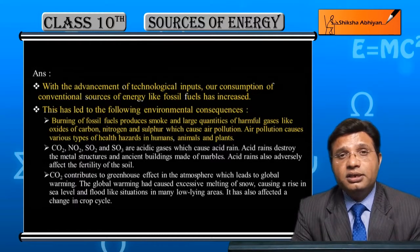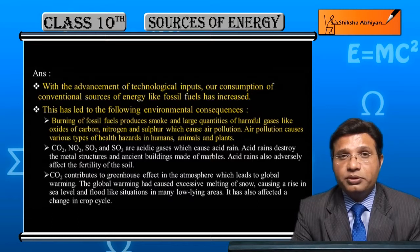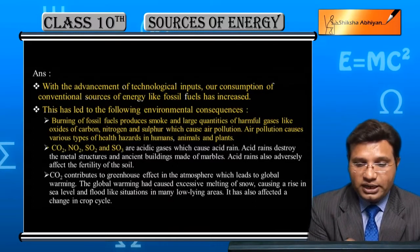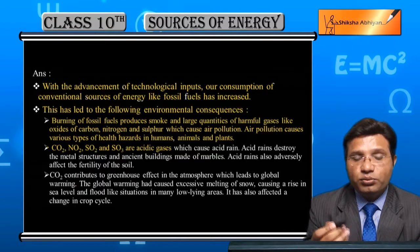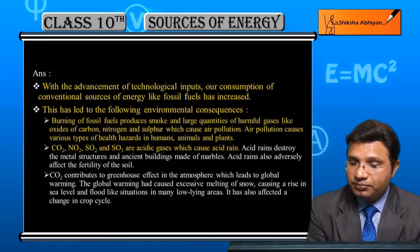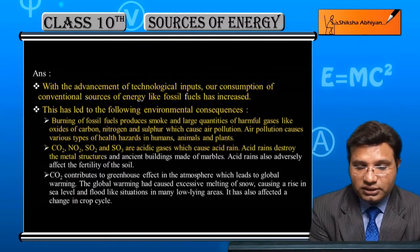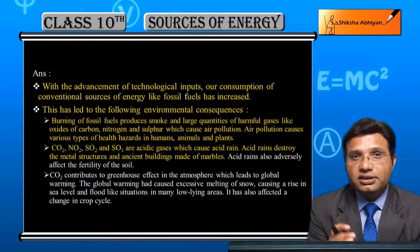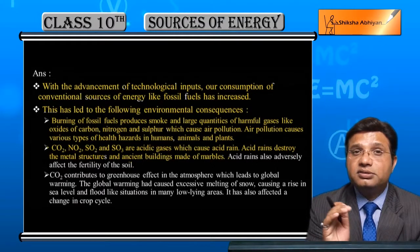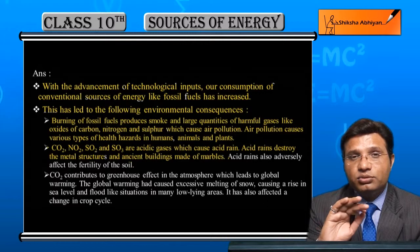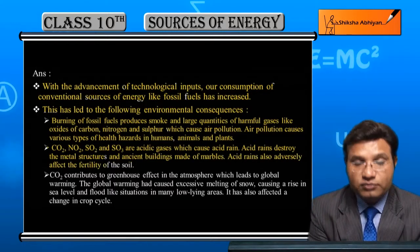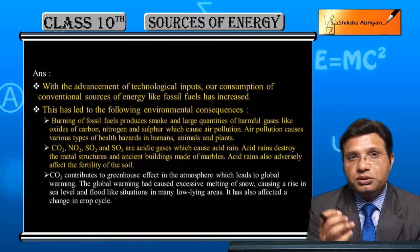Gases like CO2, NO2, SO2, and SO3 are acidic gases produced from fossil fuels. These form acids which cause acid rain. Acid rain adversely affects the luster of monuments and the fertility of the soil.